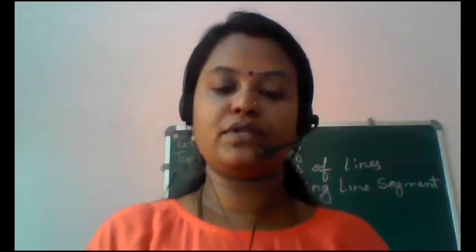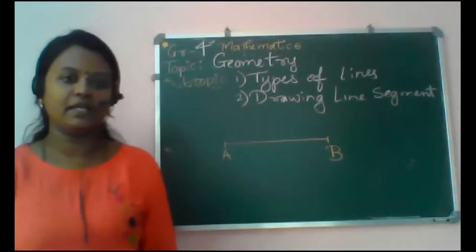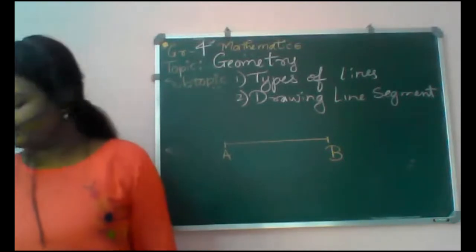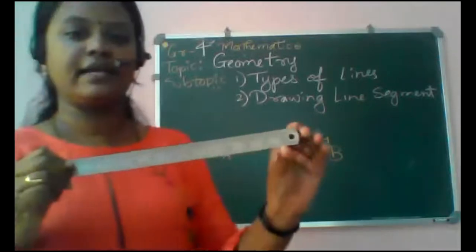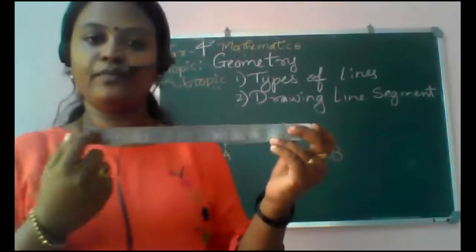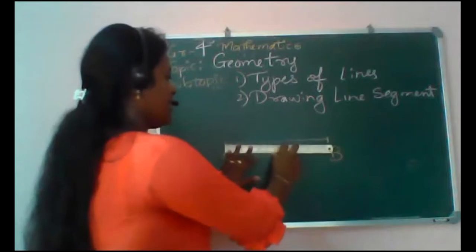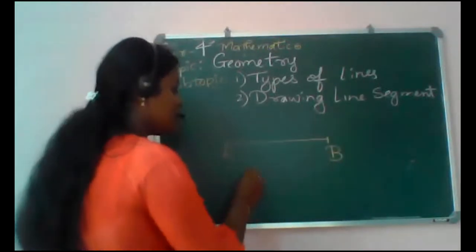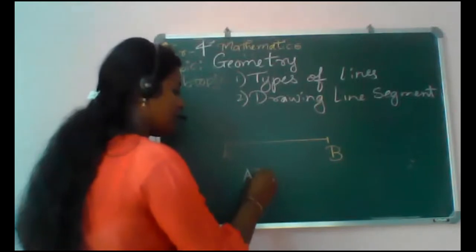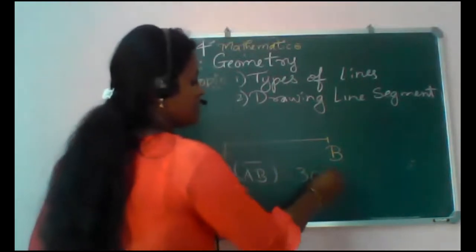Now let us solve a short example. Here is line segment AB drawn in front of you. Let us find its length. Taking a ruler with divisions starting from 0 to 15, I start with point A at 0 and measure the distance — it shows 30 centimeters. So line segment AB has a length of 30 centimeters.